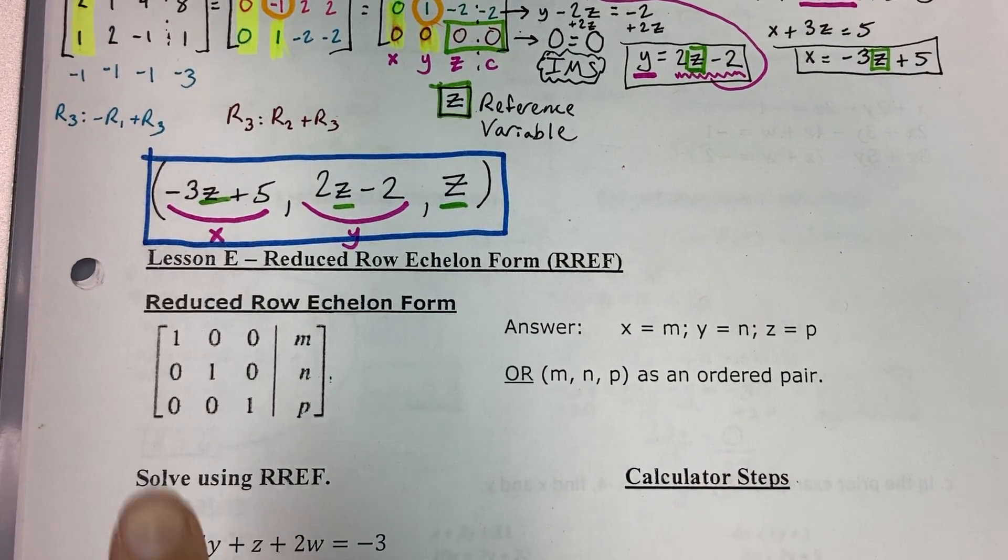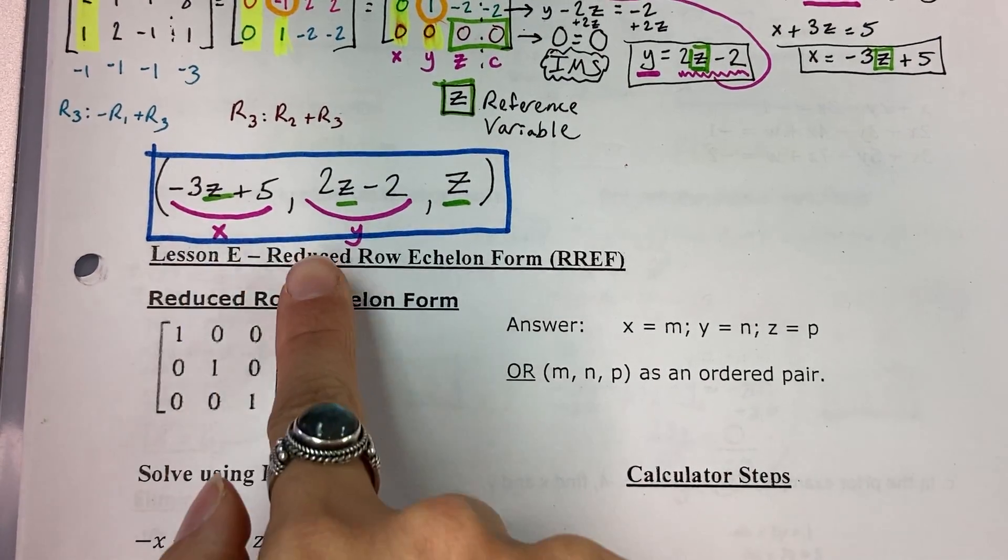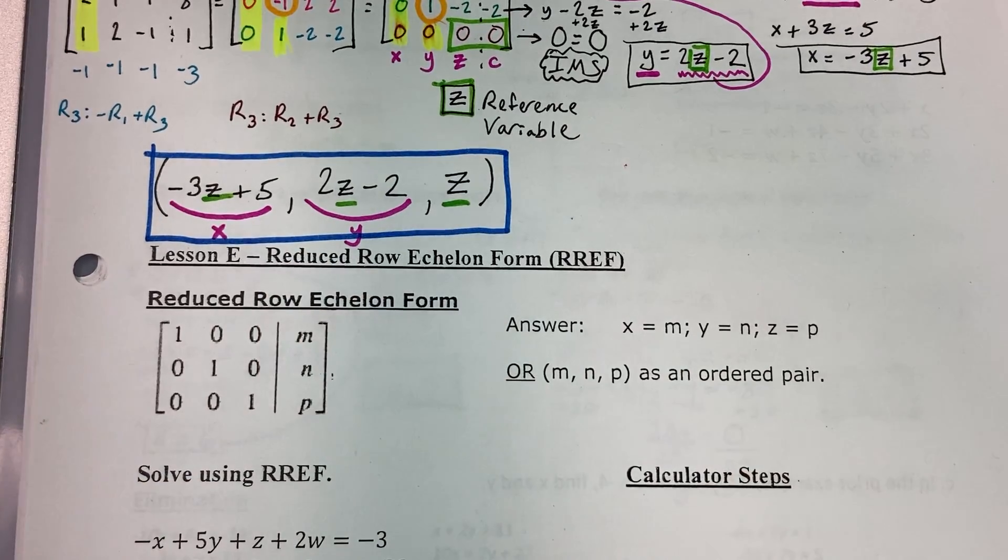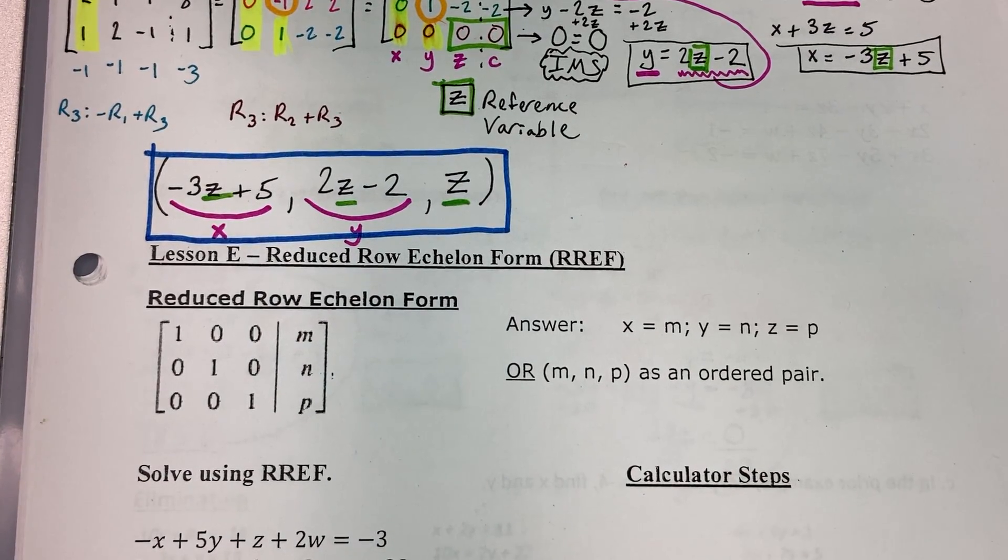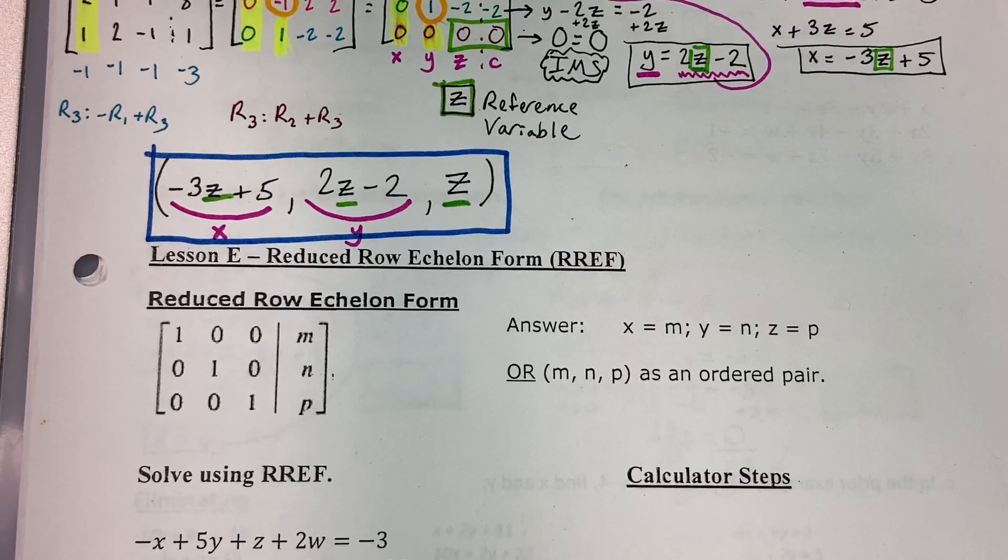Good morning folks. In this video we're going to be starting lesson E, which is reduced row echelon form, also abbreviated RREF.